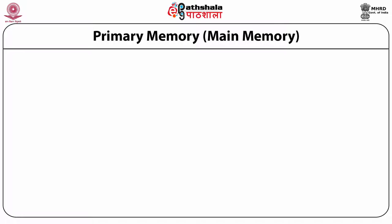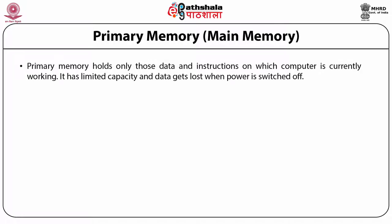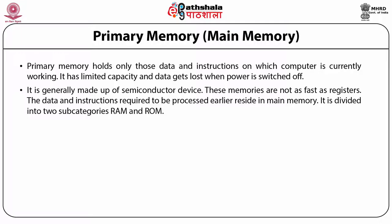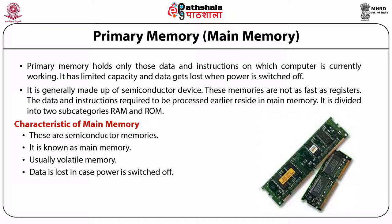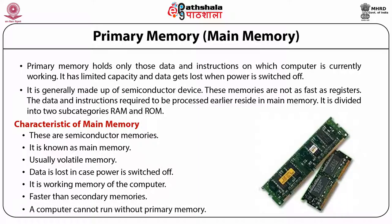Primary memory holds only those data and instructions on which the computer is currently working. It has a limited capability and data gets lost when the power is switched off. It is generally made up of semiconductor devices and the memory is not as fast as registers. It is divided into two subcategories: RAM and ROM — random access memory and read only memory. The characteristics of the main memory are that it is basically semiconductor memory, volatile memory — that is the data is lost in case power is switched off — and it is the working memory of the computer. It is faster than all the secondary memories and a computer cannot run without primary memory.